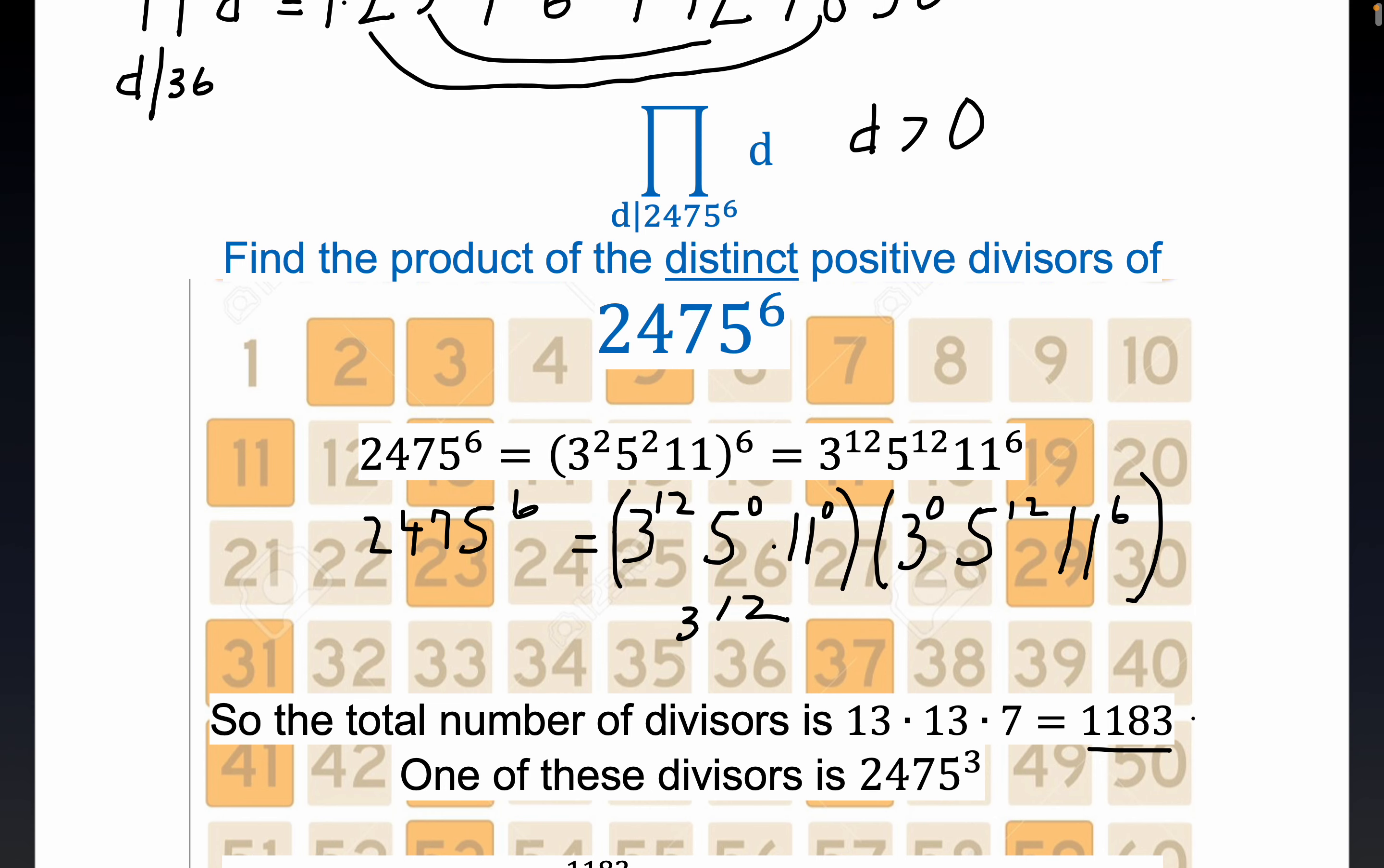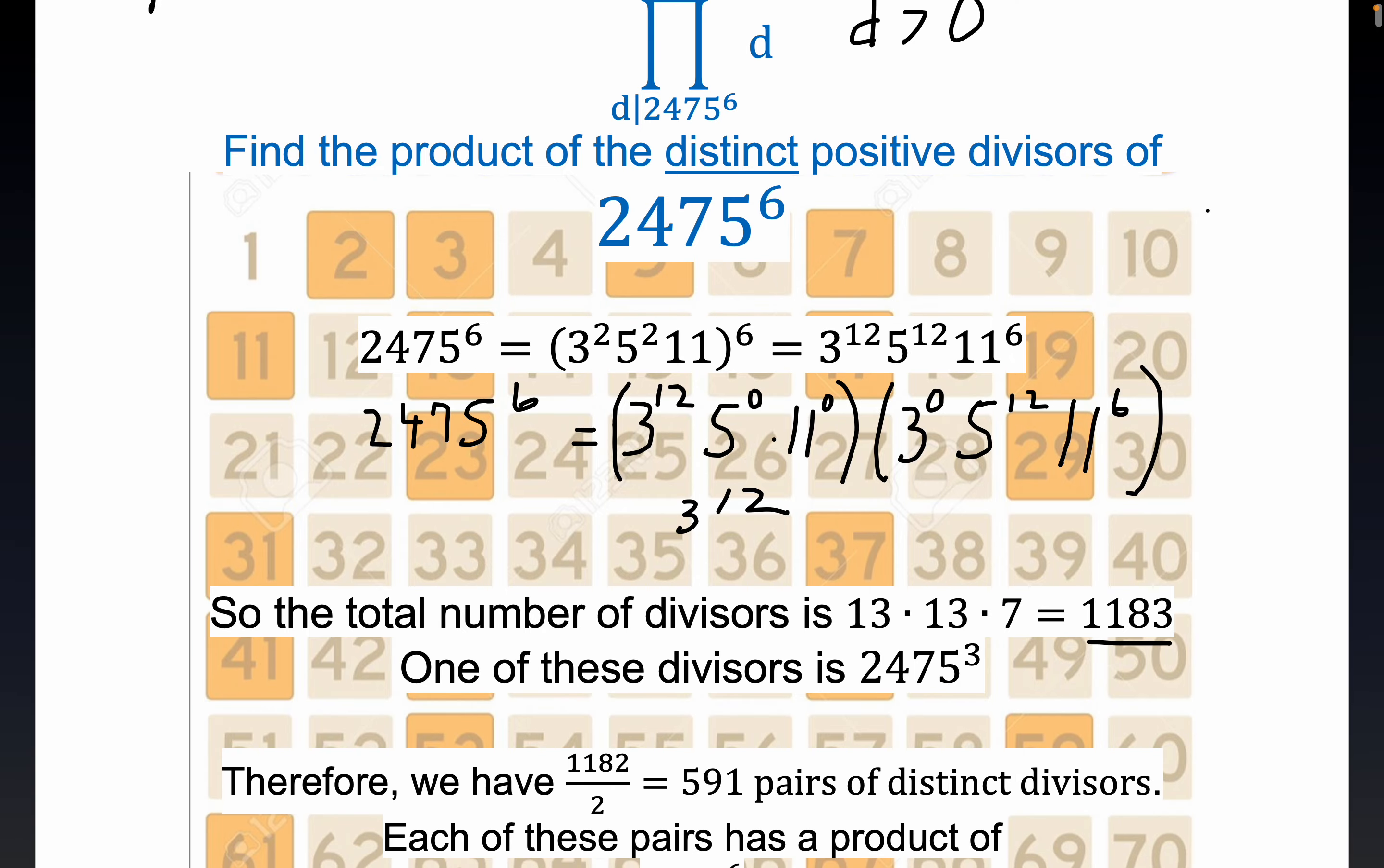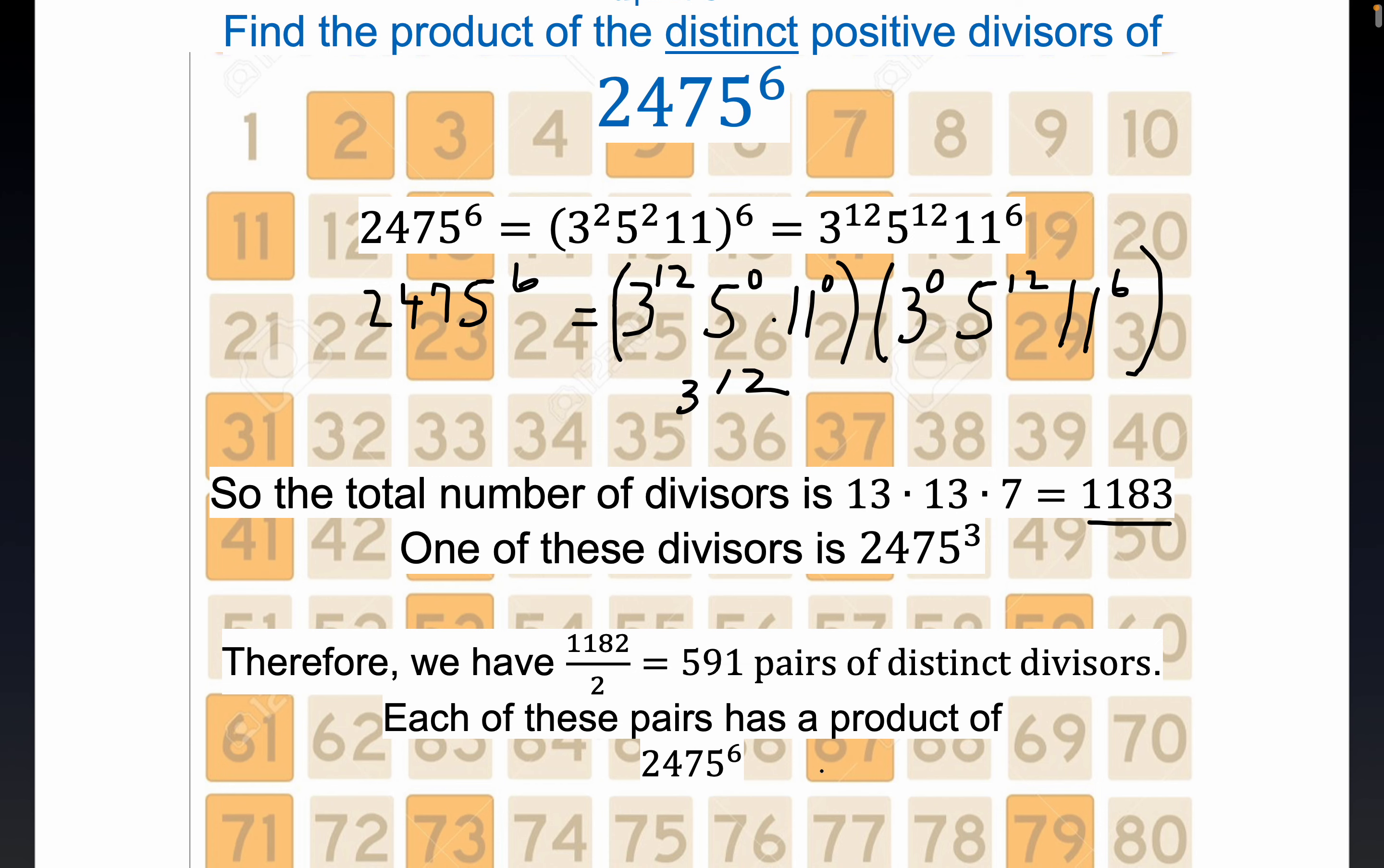So in that sense, we get 1183 divisors. Now, one of the divisors plays the very same role as six did right up here. Like six squared corresponds to 36, right? But it's not a pair of distinct divisors like the others. So let's write that down. One of the divisors is 2475 cubed, and that squared is the 2475 sixth that you see right here. So notice we dropped from 1183 right here to 1182. But each of the pairs multiplies out to give you 2475 to the sixth power, right? We had to divide by two because that would give you 591 pairs of distinct divisors. Each of these pairs has a product of the number we're interested in right up here.